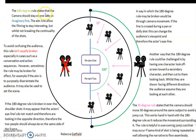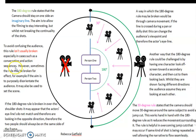The 180 degree rule ensures that the camera should stay on one side of the imaginary line. Here, both the 180 degree and the 30 degree rule are shown in this picture. The aim is to allow filming to stay interesting whilst not breaking the continuity. To avoid confusing the audience, this rule is usually followed, especially in conversation and action sequences. However, sometimes the rule may be broken for effect — for example, if the aim is to purposely disorient the audience, it may be used to set the scene.